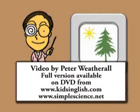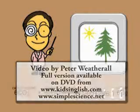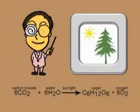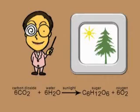Simple Science: What is Photosynthesis? Photosynthesis is the way plants use sunlight to turn carbon dioxide and water into sugar and oxygen.